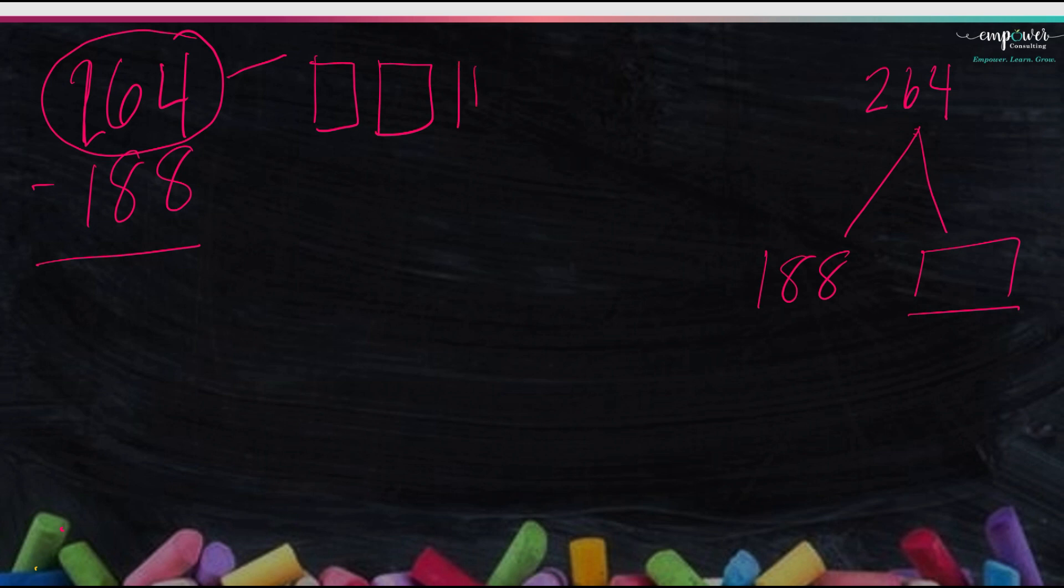So when I have 264, I'm going to do my magnifying glass. This is the number I have. I only have 200, 10, 20, 30, 40, 50, 60, 61, 62, 63, 64.